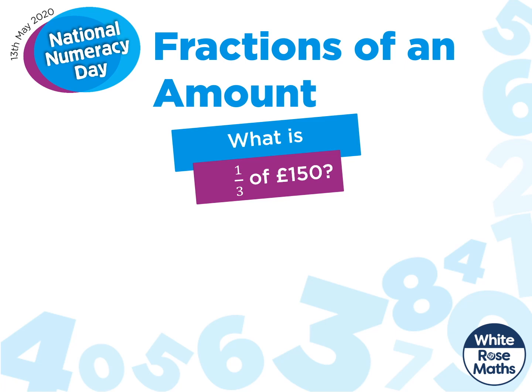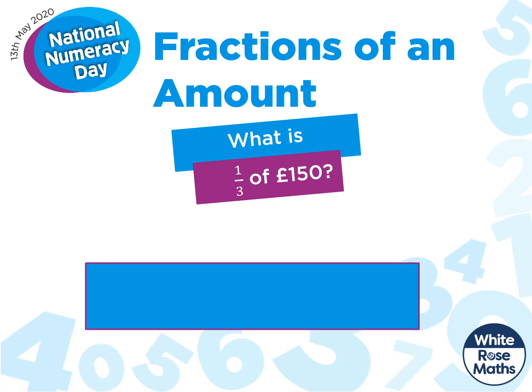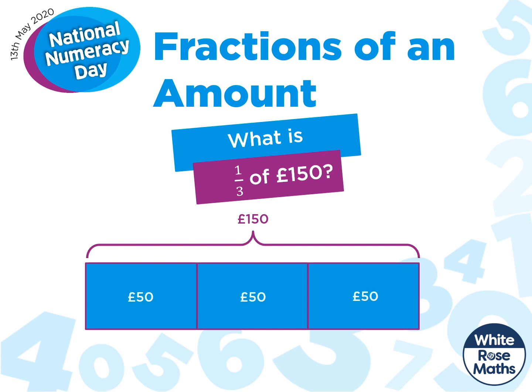Let's take a look at a question. What is one-third of £150? Here's my whole — this must represent 150 and we want to find a third of it. So let's split our whole into three equal parts. This helps us see that to find the value of one part we need to share £150 between three. This gives us £50 in each part.